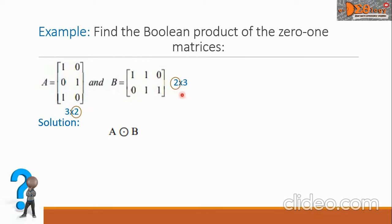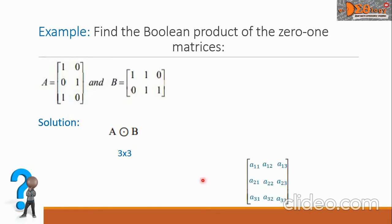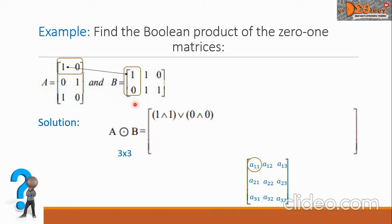The resulting product matrix must be three by three — the number of rows of A by the number of columns of B. This is the general form of the three by three result matrix. Let us now solve the elements one by one. For the first element C sub 1,1, we consider the first row of A and the first column of B, and write: (1 AND 1) OR (0 AND 0).